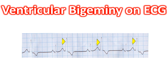Ventricular premature complexes are seen alternating with normal sinus complexes in ventricular bigeminy. VPCs are identified as bizarre QRS complexes not preceded by P waves and occurring before the expected P wave in a premature fashion. In this tracing, the normal P waves originating from the sinus node are seen as small humps in the ST segments of the VPC.